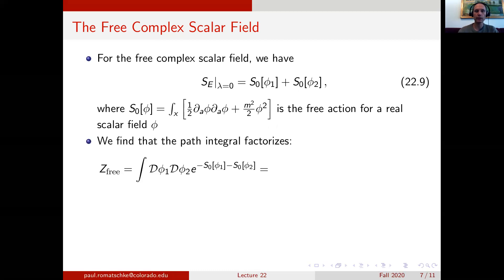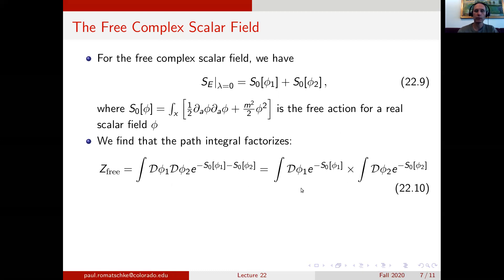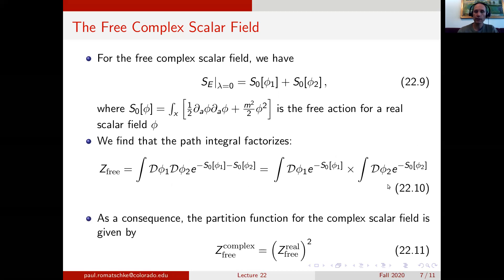Plugging this result into the path integral, we find that the partition function for the free complex scalar field factorizes because the two terms in the exponent separate. So we find this is a path integral over phi 1 times a path integral over phi 2. Clearly both of those are nothing but the partition function of the real scalar field. So the partition function for the complex scalar field in the free theory case is nothing but the partition function of the real scalar field in the free case, squared.